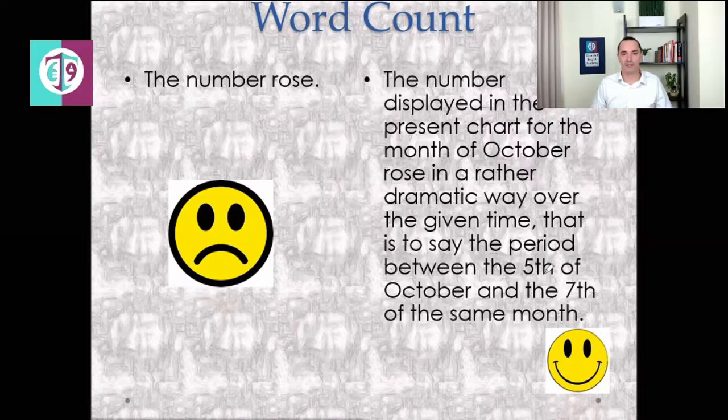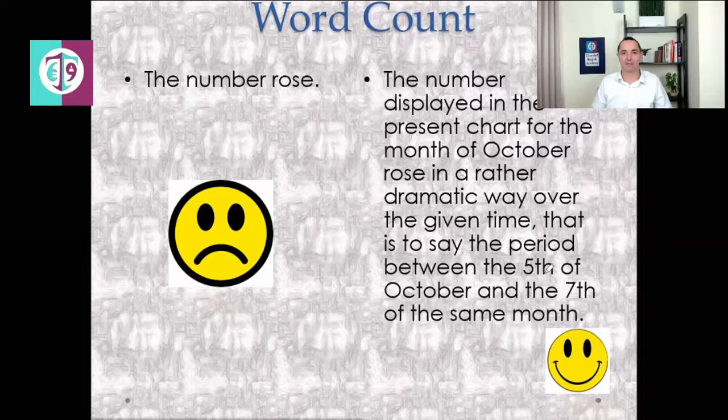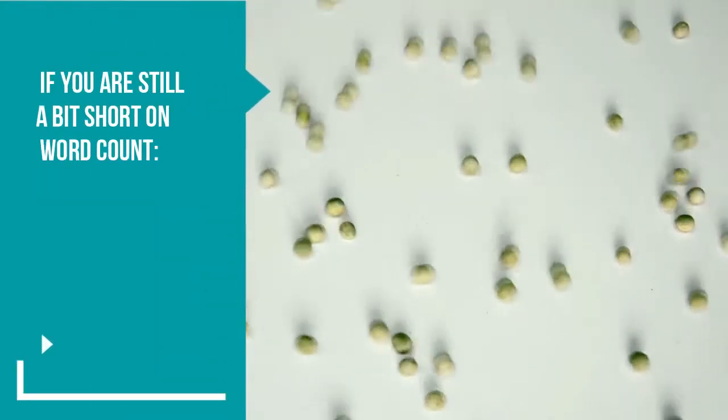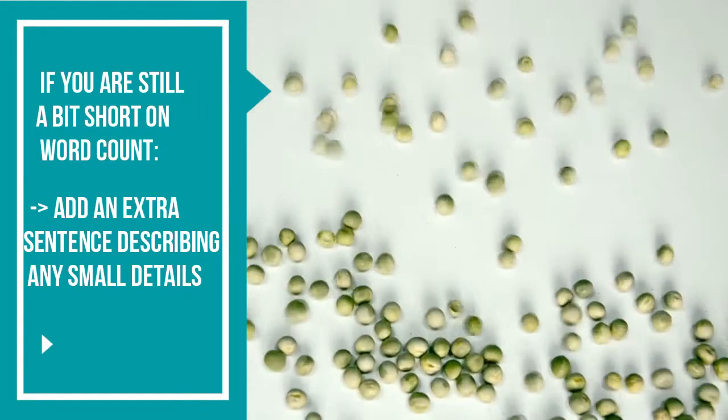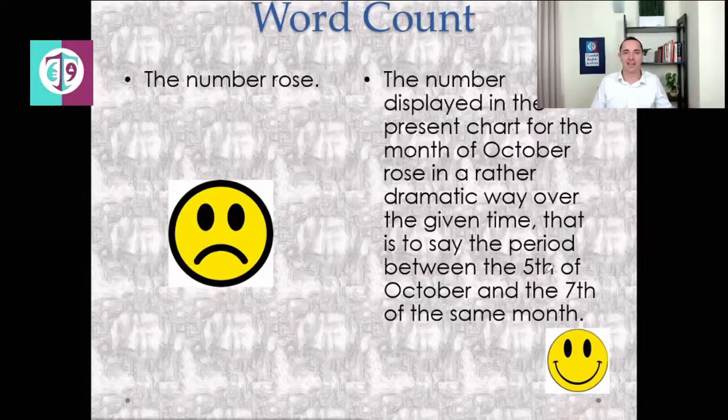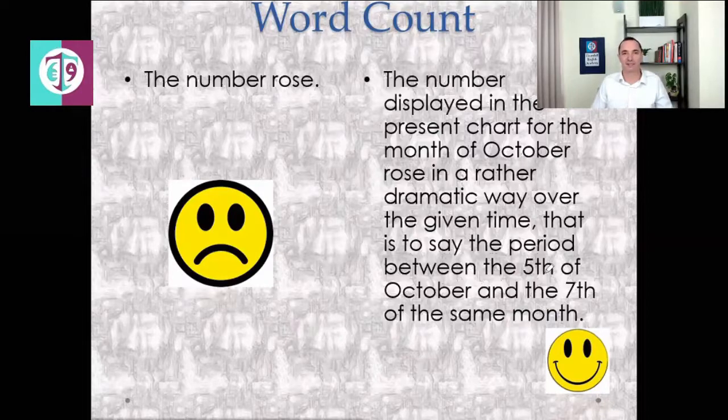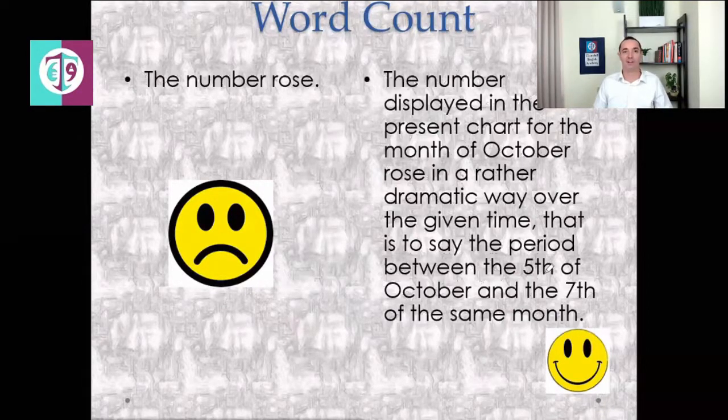Also, if you're really stuck for word count, another thing you can do is simply add some irrelevant detail. Describe anything at all in the information, even if it's not a key feature just to make up that extra 10 or 20 words. It's not great, but it's a good way to avoid losing a point for task achievement.